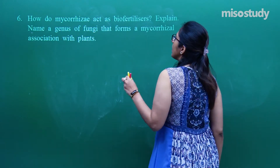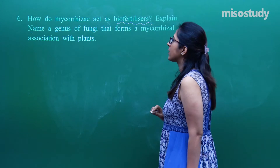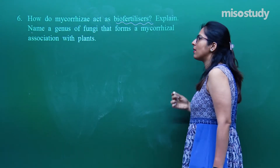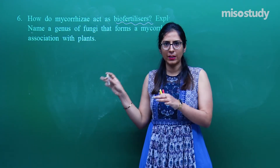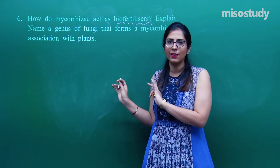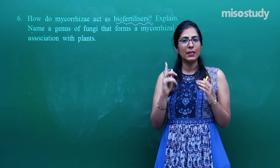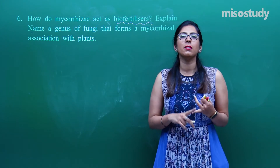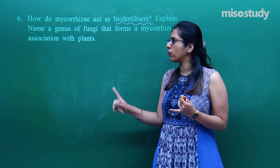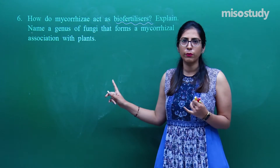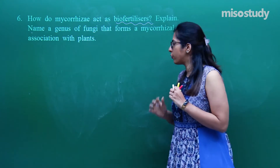Question number 6 is also of 2 marks: How do mycorrhizae act as a bio fertilizer? We already studied this in the previous question — you explain regarding Glomus, a genus of fungi that forms a mycorrhizal association with plants. The reason I included this question is that one type of question can be asked in many forms, so you need to recognize both forms.